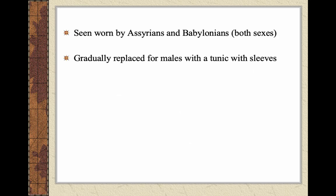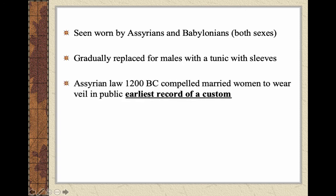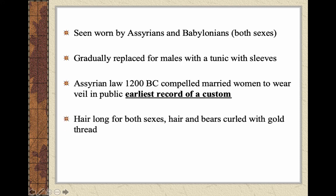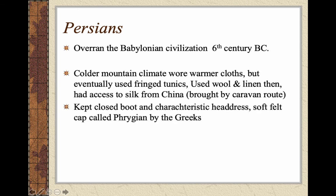Evidence shows that Assyrians and Babylonians — both male and female — used this rectangular cloth. Men gradually replaced it with a tunic, a rectangular piece but with sleeves added. Around 1200 BC, Assyrian law stated that married women must wear a veil in public — the earliest record of a custom or rule of dress. Hair was worn long by both sexes, and hair and beards would be curled with gold thread to show status. Persians overran the Babylonian civilization in the 6th century BC. Living in cold mountain climates, they wore fringe tunics, used wool from sheep, linen, and eventually had access to some silk from China via the caravan route. They wore closed boots and a characteristic headdress made of soft felt.